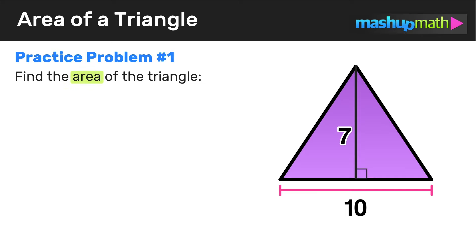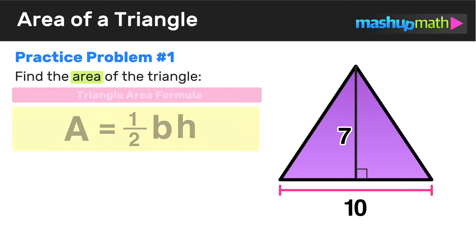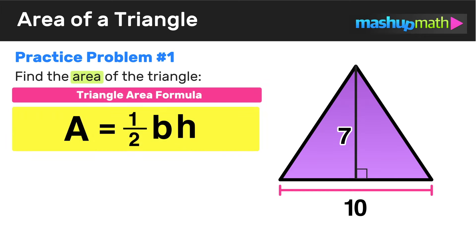Alright, here's our first practice problem. We have to find the area of the triangle shown. To solve this, we use the triangle area formula: A equals one half times base times height. Let's take a look at the diagram and identify the base and the height. If we know those two values, we can just plug them in.